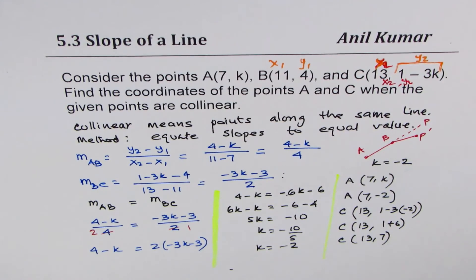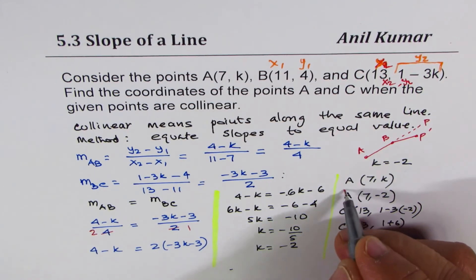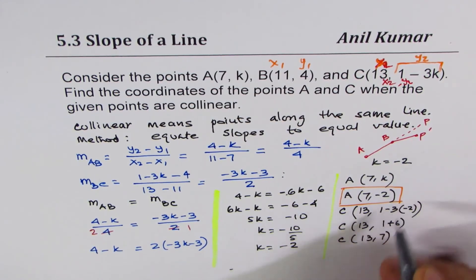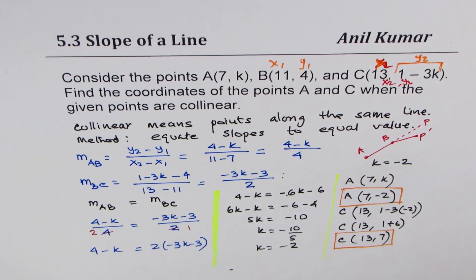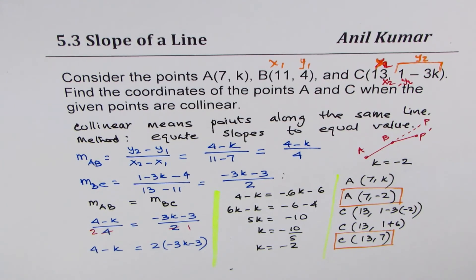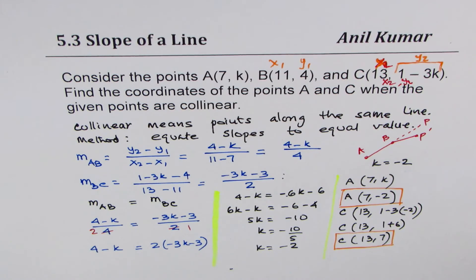Is it okay? So we get our answer. The coordinates for point A are 7 minus 2, and that for C is 13, 7. So that is how you can actually find the points, ensuring that they are collinear.